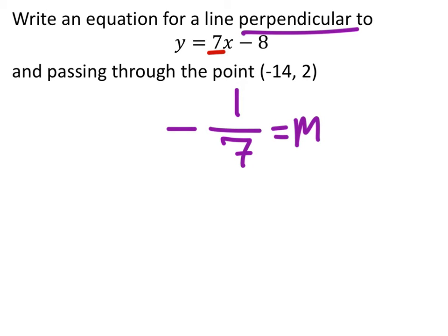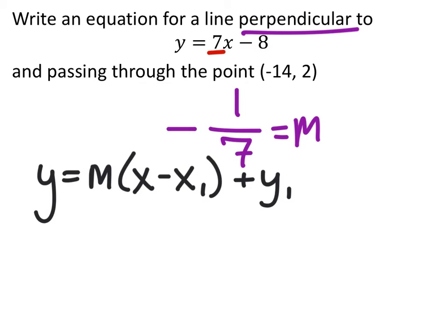Now, for the parallel line, we used slope-intercept form. We're going to write this in slope-intercept form, but to change it up just a little bit, we're going to use point-slope form. We already know the slope, so I'm going to replace the slope with negative 1/7, and replace the x1 and y1 values with the point that was given right here, negative 14, 2. So we plugged it in, and we'll make that a big fat plus sign.